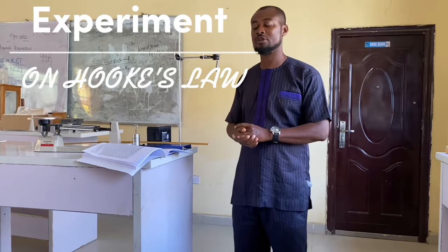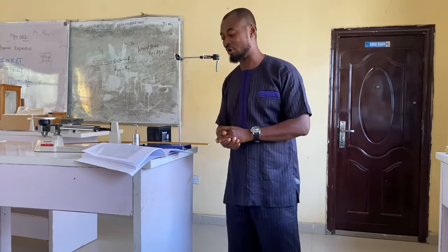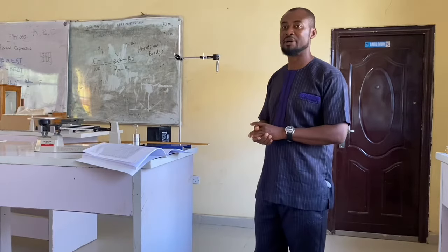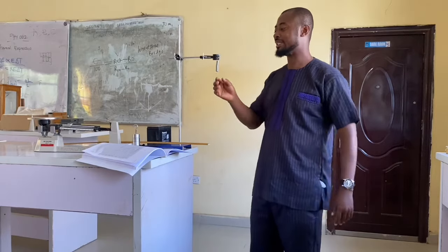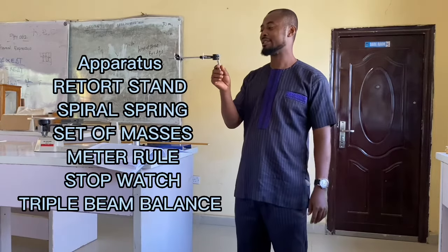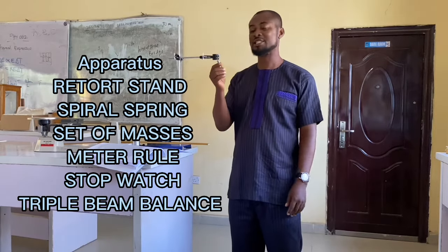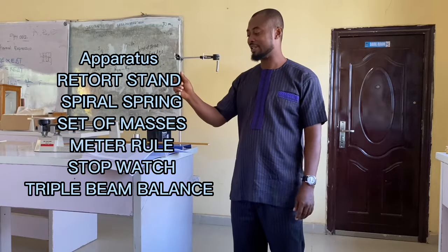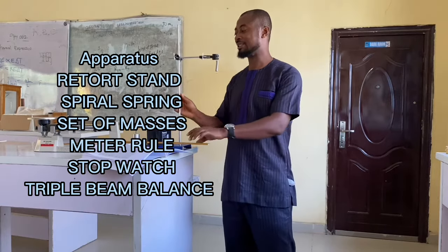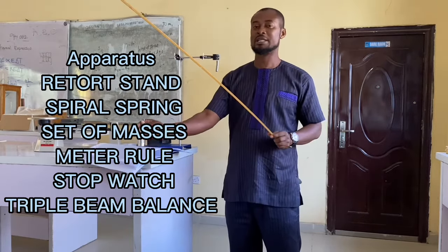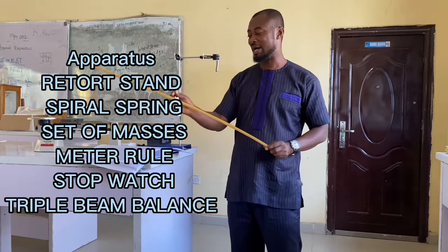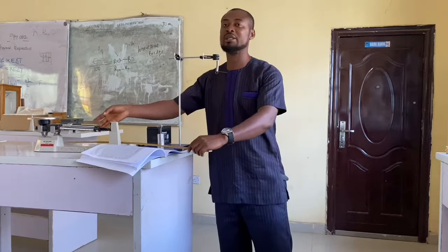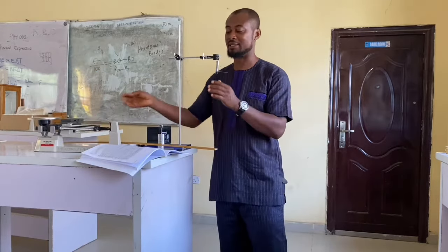Determination of force constant of a spring. The apparatus needed are a spiral spring, a rotor stand, a metal rule, set of mass and triple beam balance.